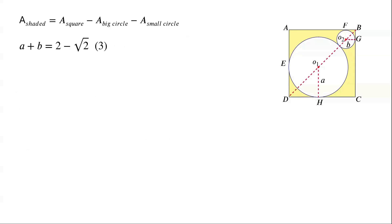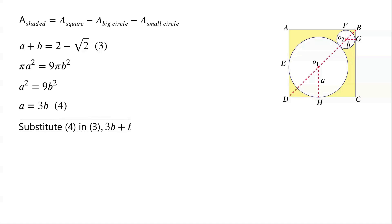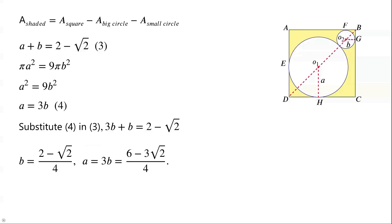We are given that the area of the larger circle is 9 times the area of the smaller circle. So we have π times A squared equals 9 times π times B squared. Dividing by π gives A squared equals 9B squared, so A equals 3B. Substituting A equals 3B into the equation A plus B equals 2 minus root 2, we get 4B equals 2 minus root 2. So B equals (2 minus root 2) over 4, and A equals 3B equals (6 minus 3 root 2) over 4.